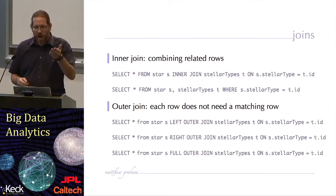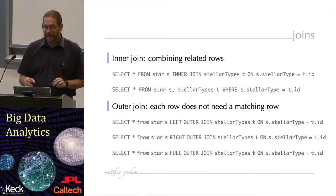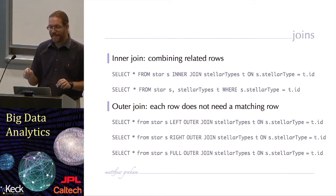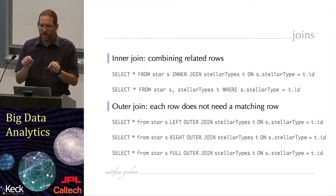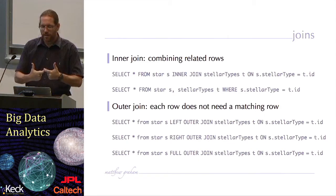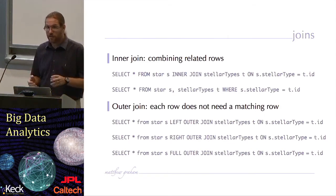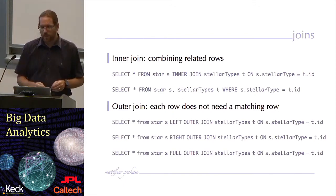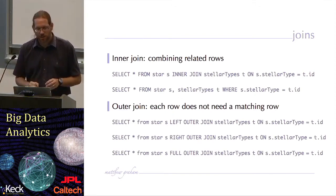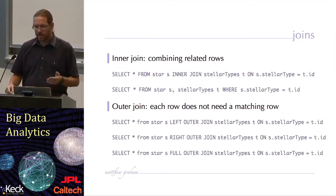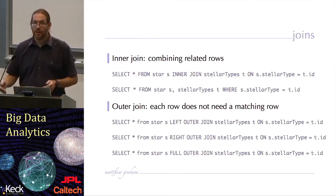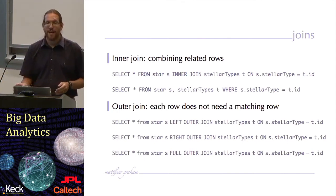In our star table, we have a column called stellar type. In our stellar types table, we have a column ID, and what we're saying is that we are joining on those two columns so that matching values between those two columns will be associated with each other. There are two ways of specifying the syntax for this. One formally uses the inner join construction. The other just says select from this table and this table where table S, aliased to S — which is the star table — has the same value as the ID column in table T, where T is the alias for the stellar types table.